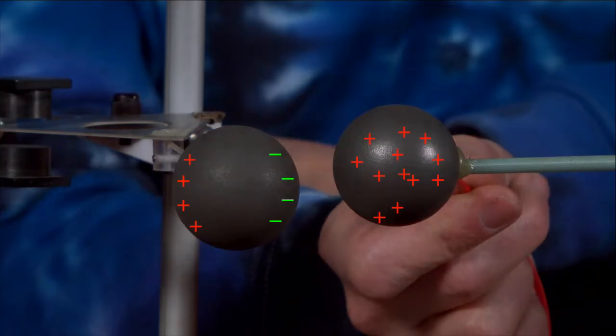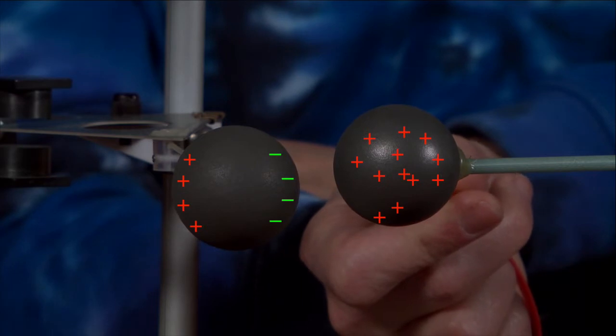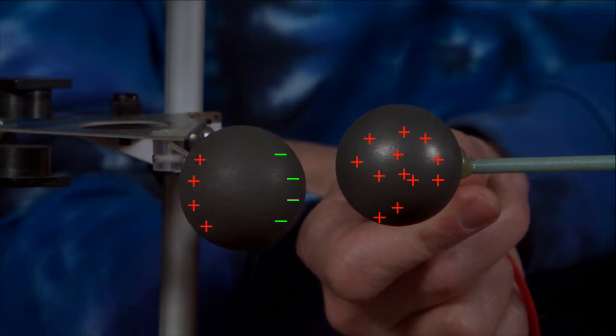And of course what happened was this. When we charged up the sphere on the right positively, the conductive sphere was attracted to it. Negative charges built up on the close side, positive charges built up on the far side, and so the two were attracted to each other.